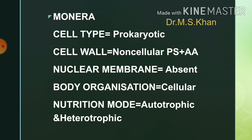Now, one by one, we will see all the kingdoms. The first one is Monera. In Monera, the cell type is prokaryotic. The cell wall is non-cellular, mainly made of polysaccharides and amino acids. Nuclear membrane is absent. Body organization is cellular. Nutrition mode can be autotrophic — either photosynthetic or chemosynthetic — and some are also heterotrophic, either saprophytic or parasitic. Normally, all bacteria come under Monera.